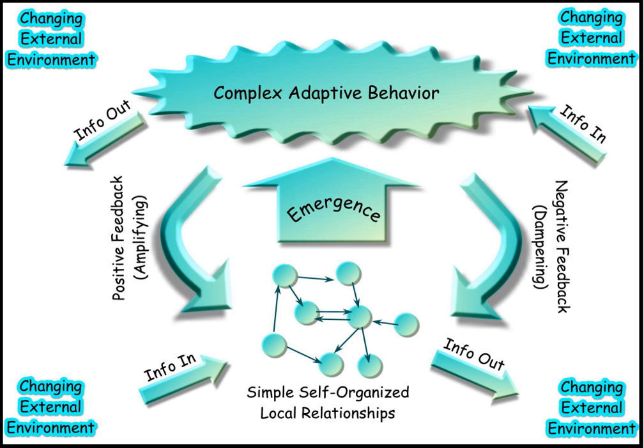Digestive system — digestion and processing food with salivary glands, oesophagus, stomach, liver, gallbladder, pancreas, intestines, rectum and anus. Cardiovascular system — heart and circulatory system, pumping and channeling blood to and from the body and lungs with heart, blood and blood vessels.